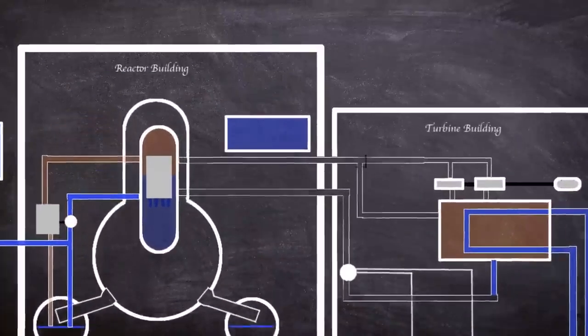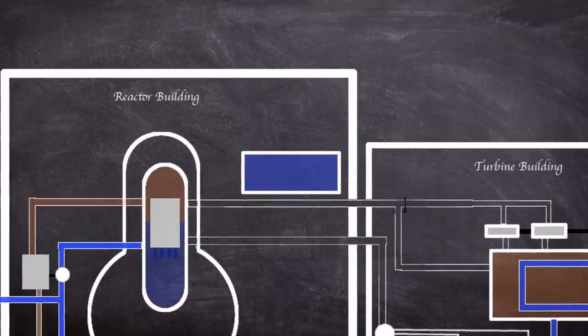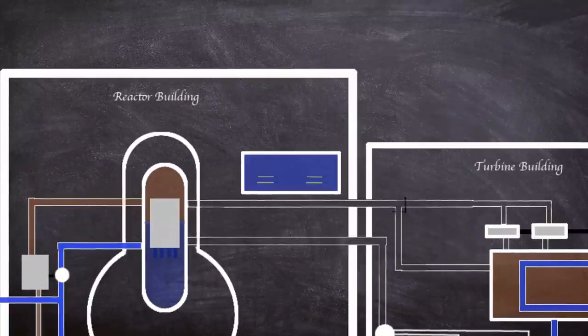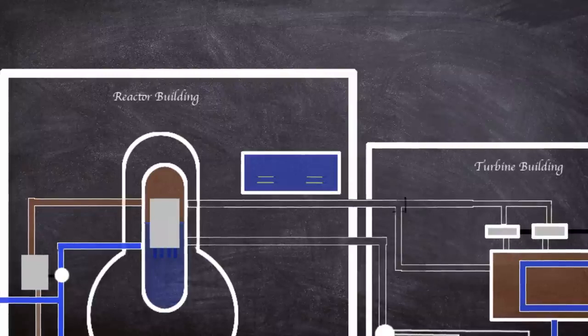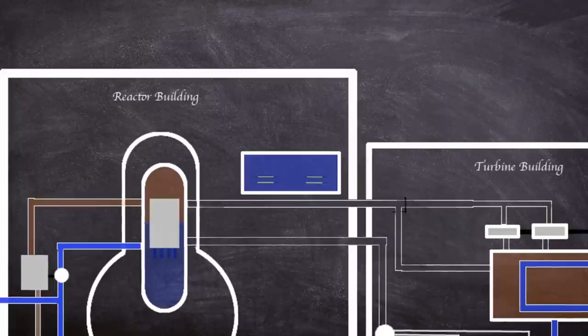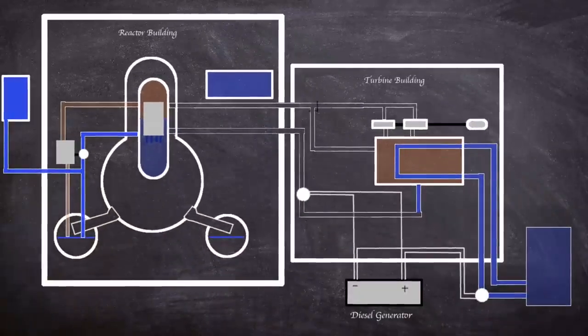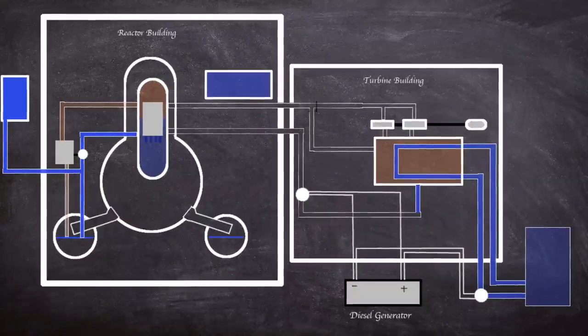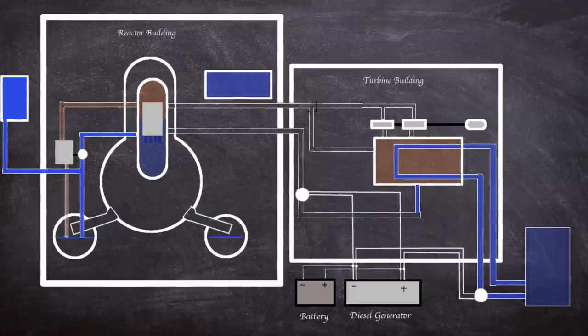However, not only the operating reactors on the 11th March had decay heat. During refuelling, the spent fuel rods are placed in pools near each reactor. These are also still hot so effective cooling is normally provided by electrical power. If it was just an earthquake the event would have been effectively managed using the on-site generators and batteries.